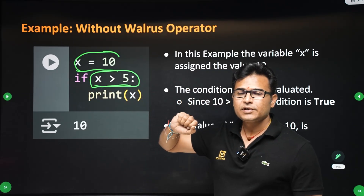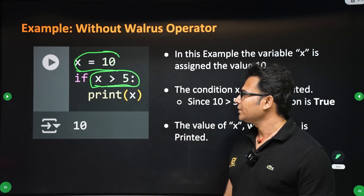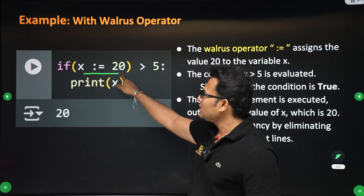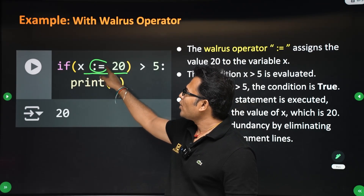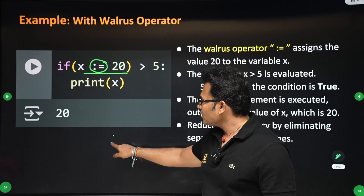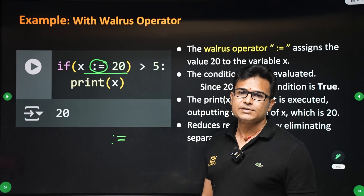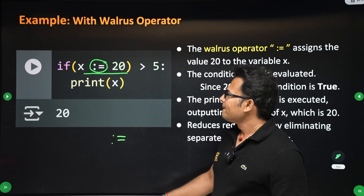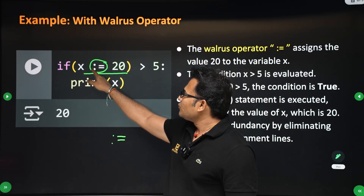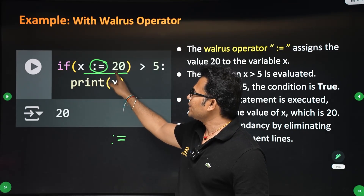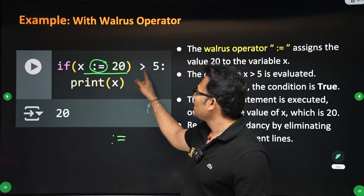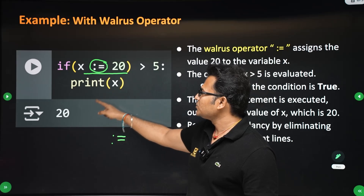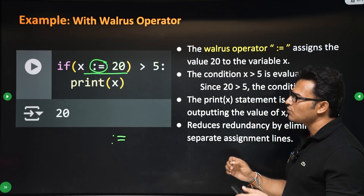The walrus operator can do both assignment and condition testing together. You can assign 20 to x directly using the walrus operator. What is the walrus operator? You put a colon and an equal sign — colon-equals is walrus. So if you write: if x walrus 20, it means you are assigning 20 to x and if that is greater than 5, yes, 20 is assigned to x and it is greater than 5, then x will be printed, which is 20. That is a simple use case of walrus.